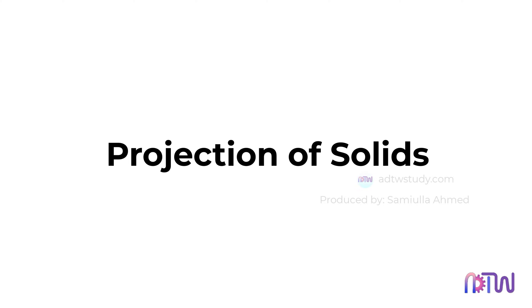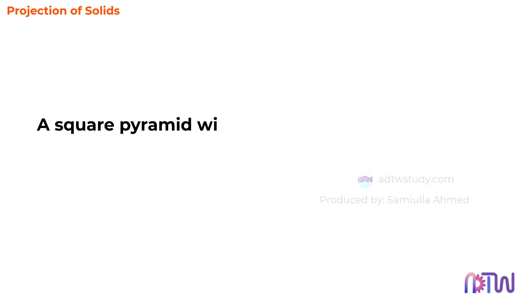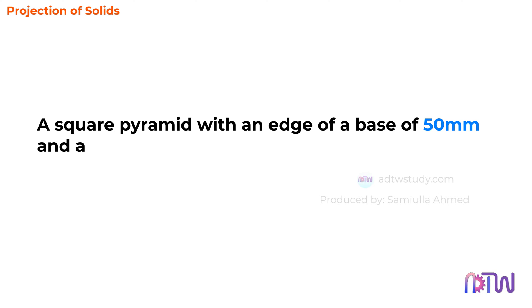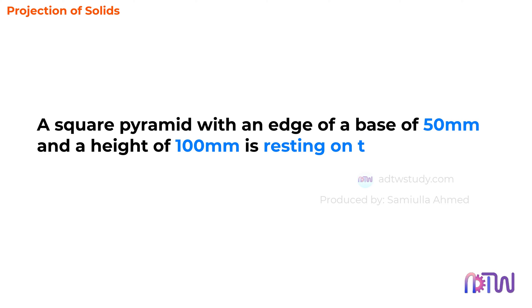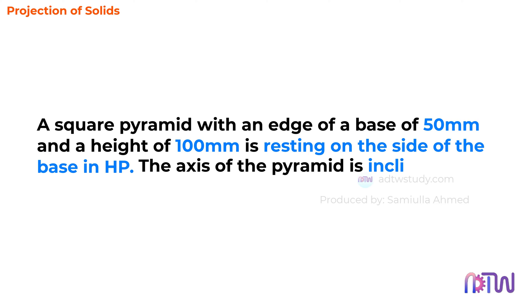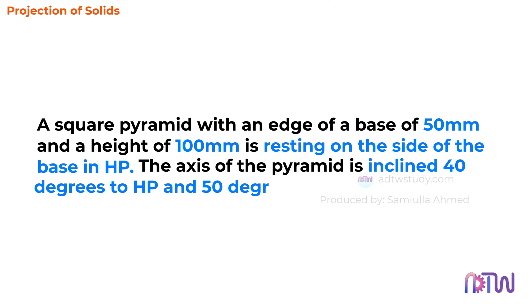Projection of Solids. Welcome back to another video where we dive into the fascinating world of projecting solids. Today we're tackling our very first problem in this realm. A square pyramid with an edge of a base of 50mm and a height of 100mm is resting on the side of the base in HP. The axis of the pyramid is inclined 40 degrees to HP and 50 degrees to VP. Draw its projection.